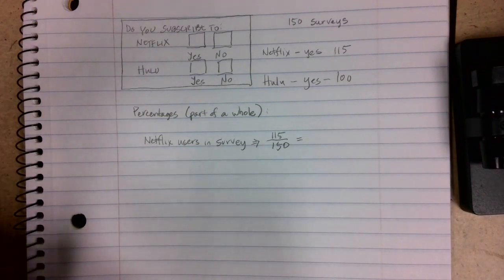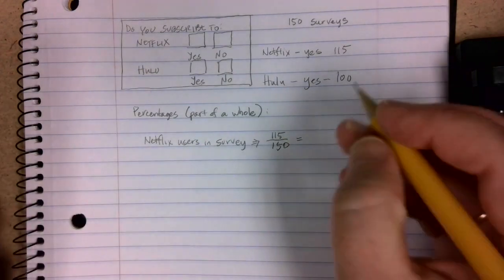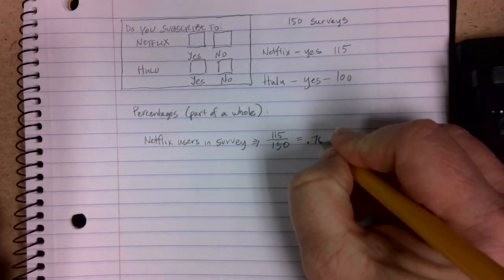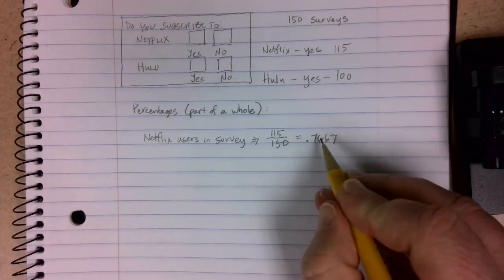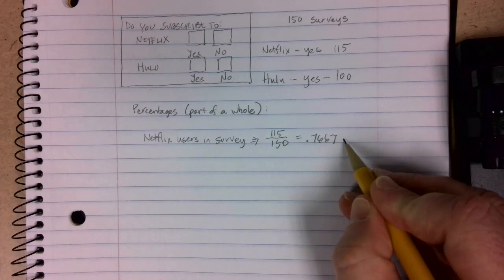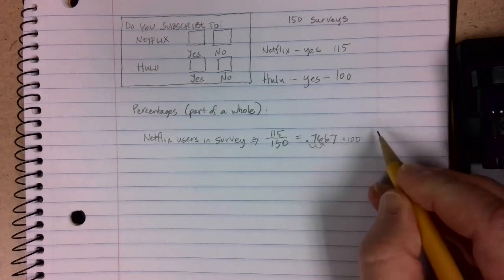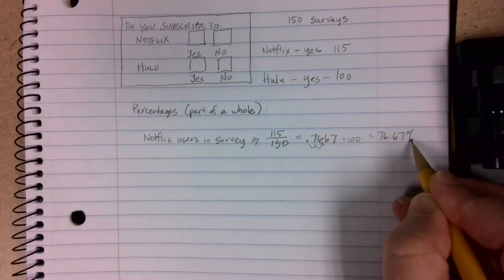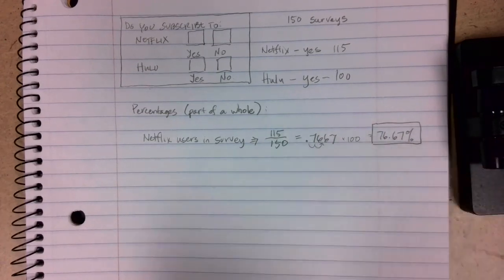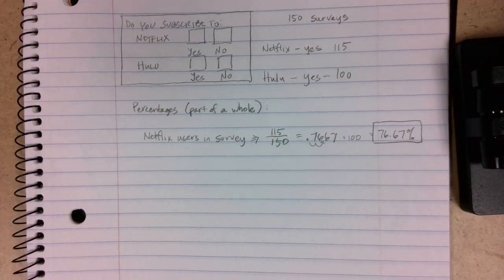In this case, if we do 115 divided by 150, we end up with 0.7667. We can write this as a percentage by multiplying by 100 or moving the decimal two places to the right. In this case, we get 76.67% of my people that I surveyed are Netflix users.